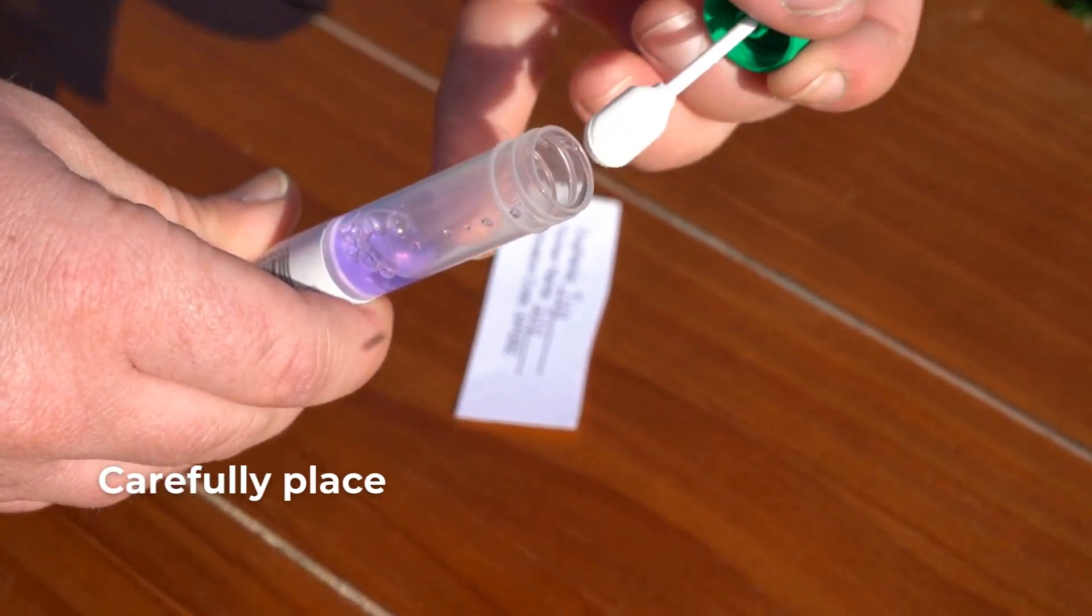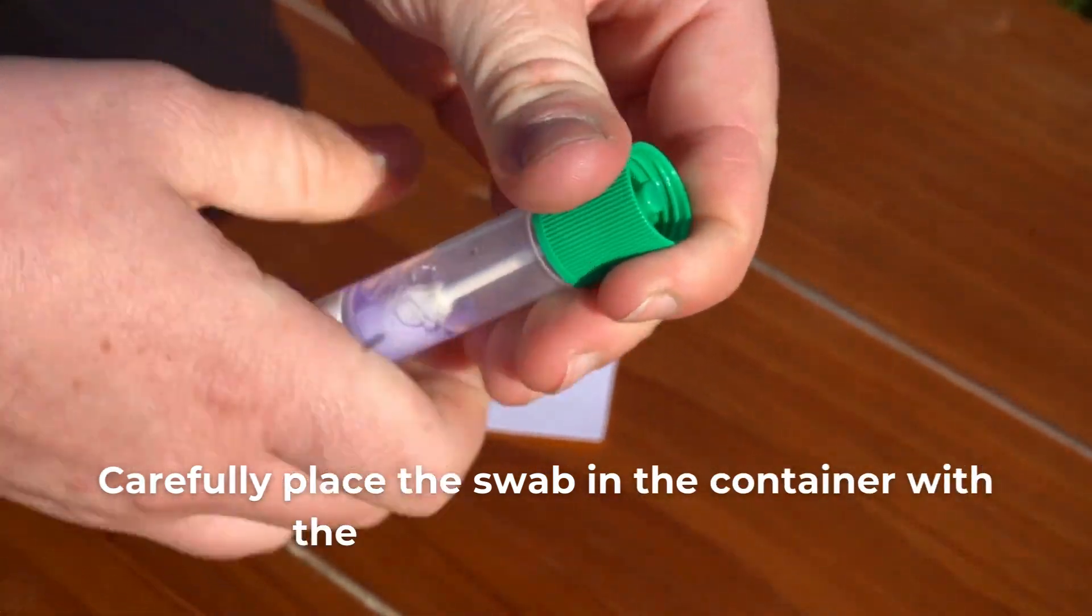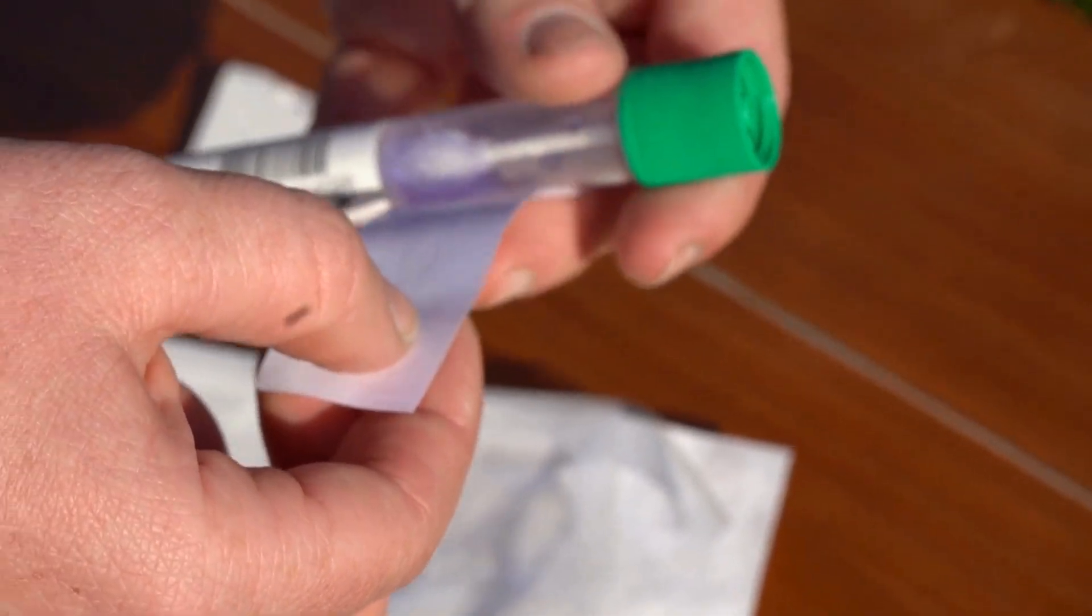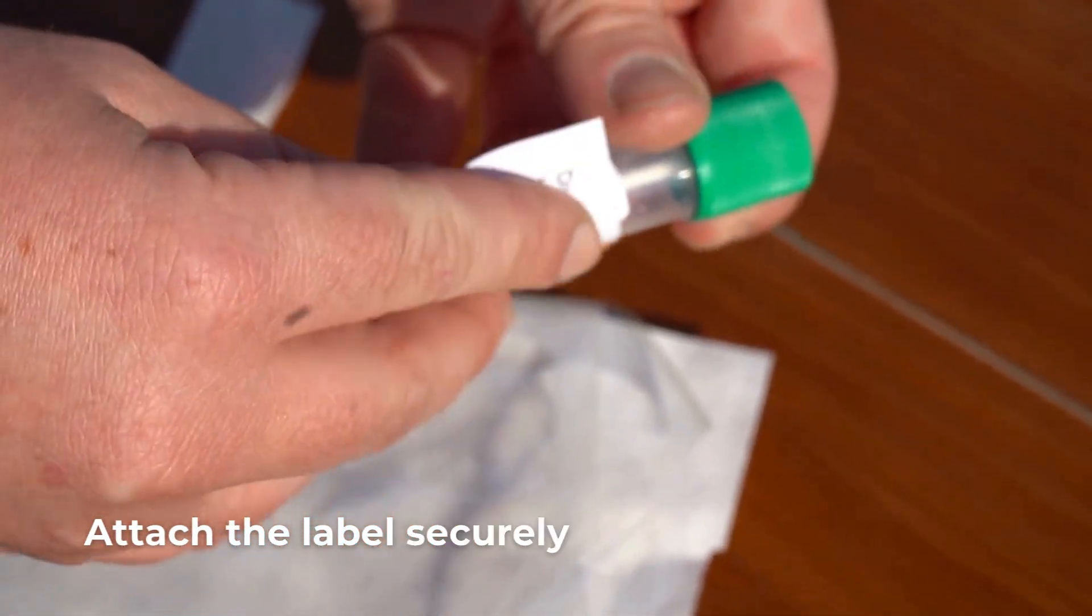Carefully place the swab in the container with the liquid and tightly sealed. Attach the label securely to the collection tube.